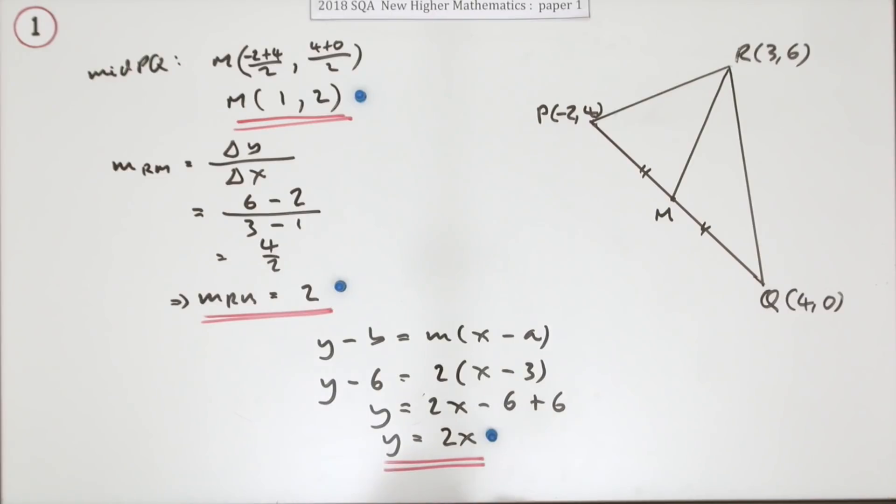Now you can write it in any form you like. You just have to make sure you don't have two constants left lying about that could have been combined into a single one. So you could have written y minus 2x equals 0, or 2x minus y equals 0.